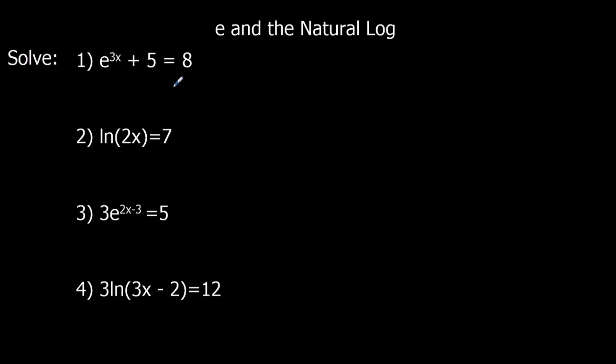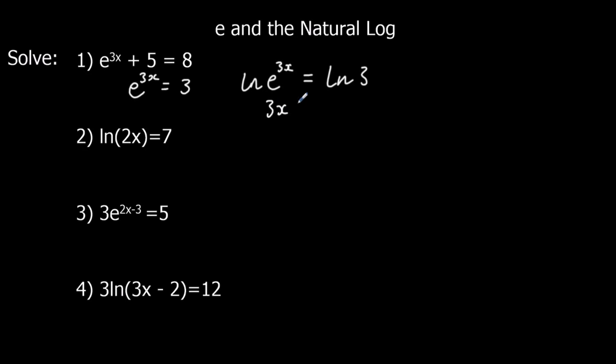First question: e^(3x) + 5 = 8. We get rid of the plus 5 by taking 5 from both sides, giving us e^(3x) = 3. Now we apply ln to both sides: ln(e^(3x)) = ln 3. ln e cancels, so 3x = ln 3. To get x by itself, we divide both sides by 3, so x = ln 3 over 3.